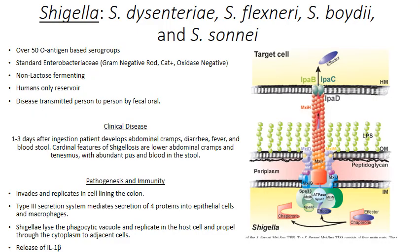Shigella has several different species. Probably the most important is Shigella dysenteriae — and that should tell you something. We're talking about a dysentery-like diarrhea. So this is another one of those organisms that leads to a gastroenteritis that is dysentery-like.